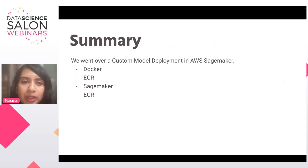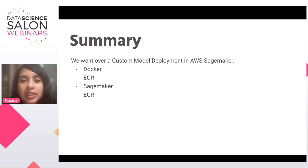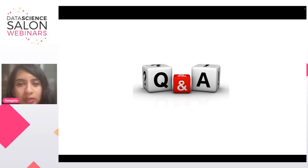To summarize, we went over custom model deployment today using SageMaker. We learned about Docker, ECR, and SageMaker, and how these three can help us deploy a custom model with AWS. Thank you all for your patience and for listening. I'd like to open the stage now for any questions you might have.